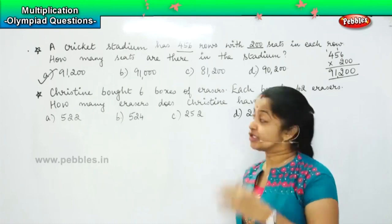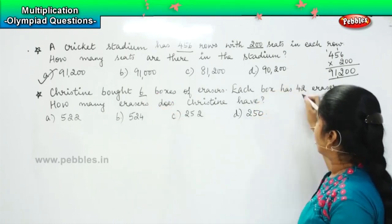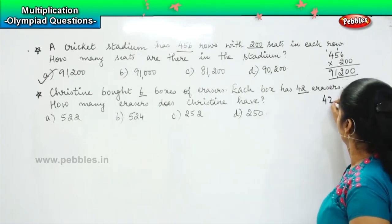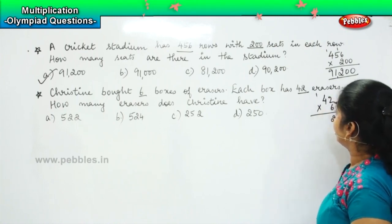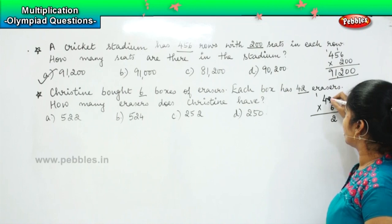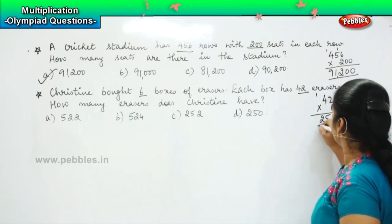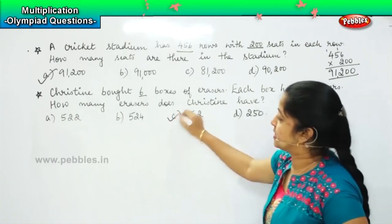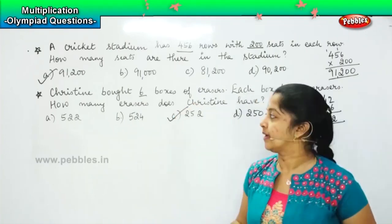So again it is a simple multiplication. Christine bought six boxes of erasers and each box has 42 erasers. So 42 into 6. 6 twos are 12, carry 1. 4 into 6 is 24 plus 1 is 25. So what is your answer? 252. Where is it? It is option C. Clear? Shall we move to the next one?